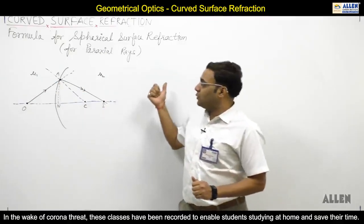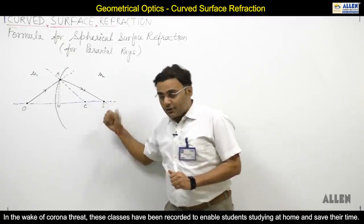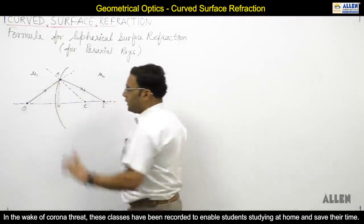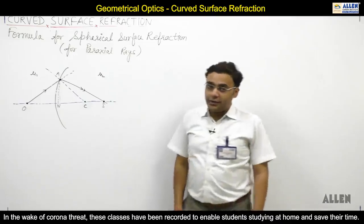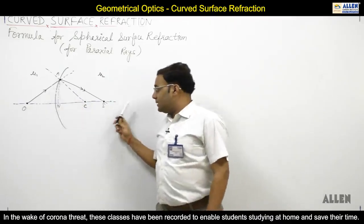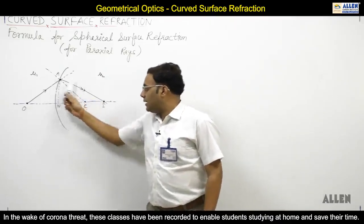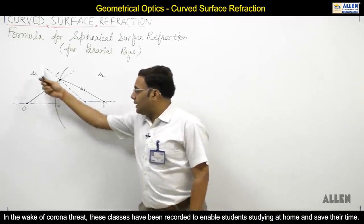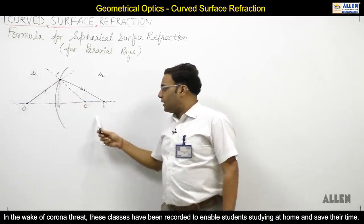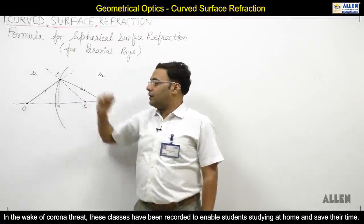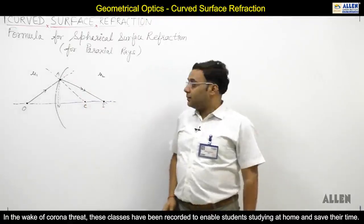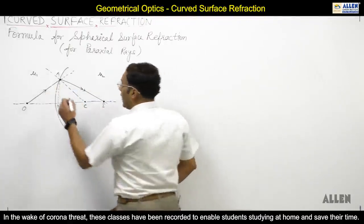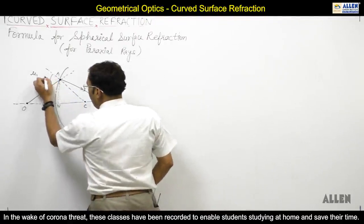So now we are going to derive the formula for a spherical surface. This is the object, from which the incident ray comes. This is the image, which the refracted ray reaches. This blue line is the normal. The angle between the normal and the incident ray is called the angle of incidence, that is I.